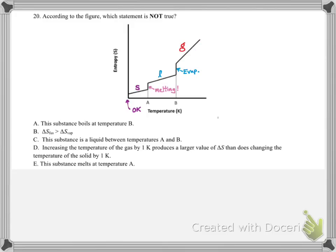The first one says, the substance boils at temperature B. So this is temperature B. This is where evaporation takes place, right? Evaporation, also known as boiling. So this one is true. The question is asking for which one is not true, so we can eliminate this choice. This one says the delta S of fusion, the entropy change of the solid to liquid, is greater than the entropy change of vaporization, liquid to gas. Well, if we consider the entropy change of fusion, right there, and we compare it against the entropy change as it's being evaporated, we can see that this is much greater for the evaporation. So that means that this one actually is false, which means this is our answer.